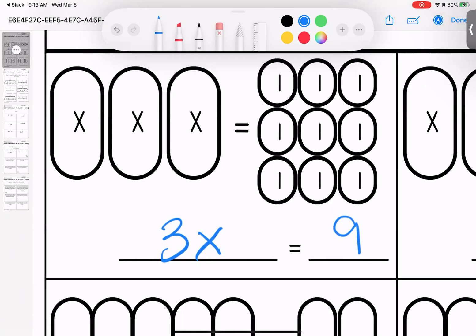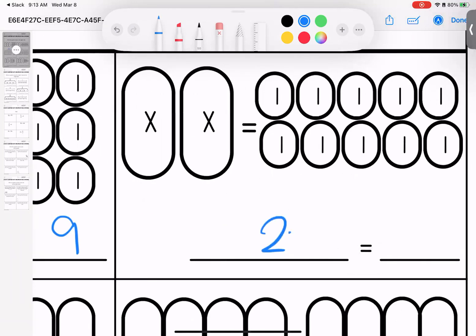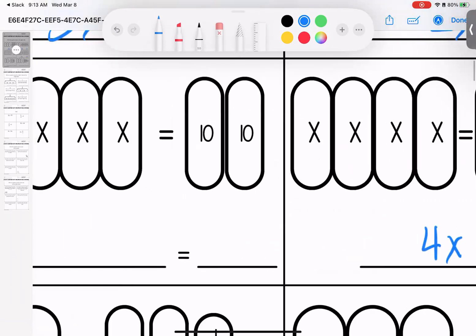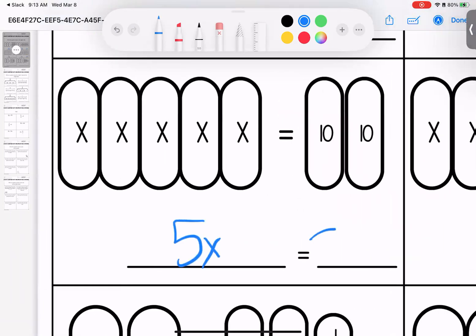Over here I have 2x and that's equal to 10. Down here I have 4x and that's equal to 40. Here I have 5x and that's equal to 20.